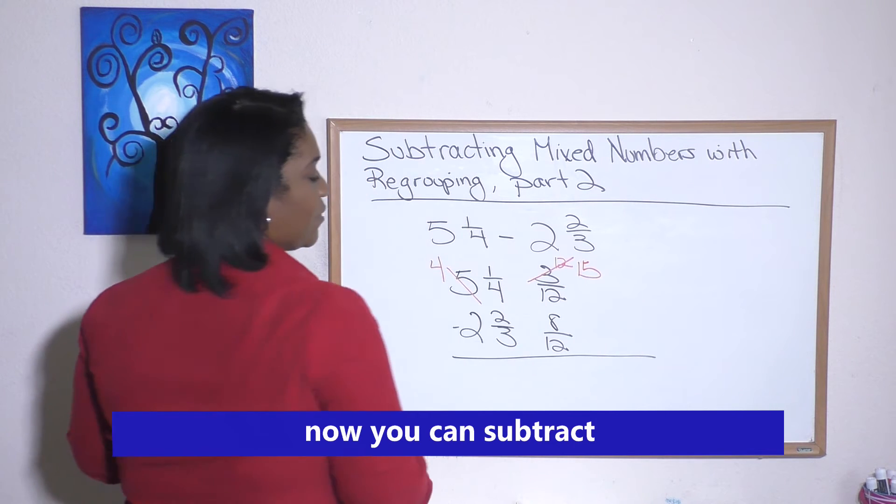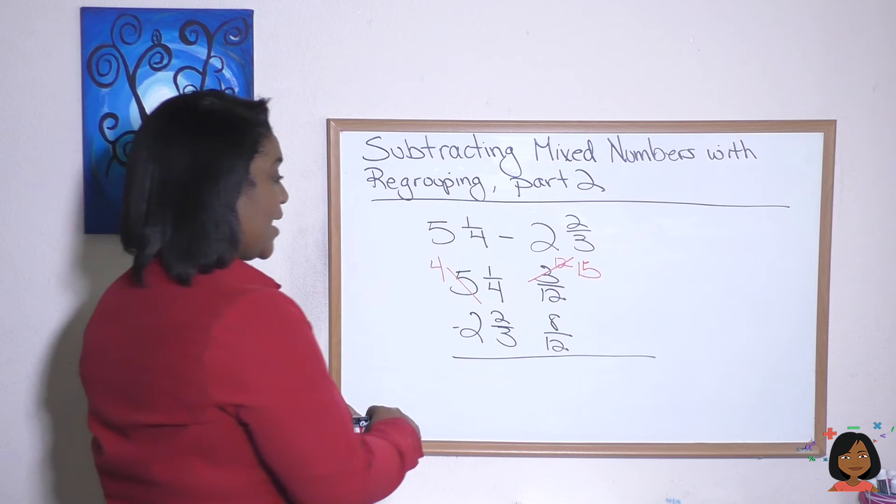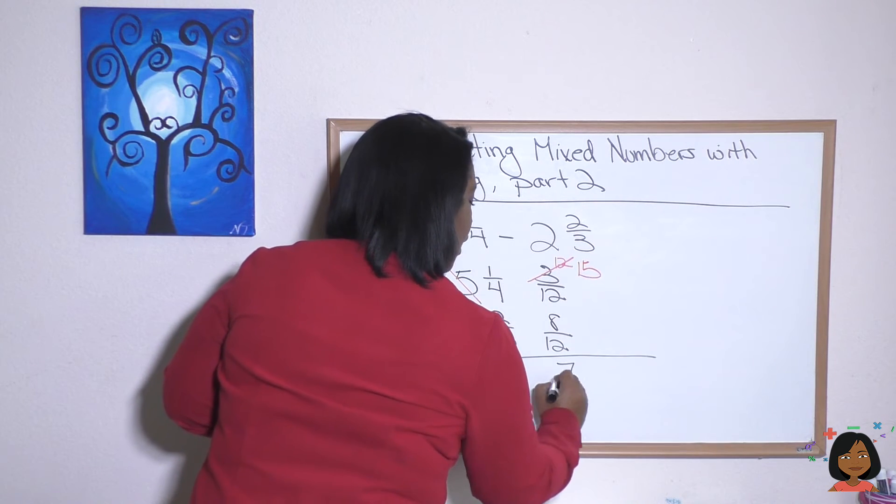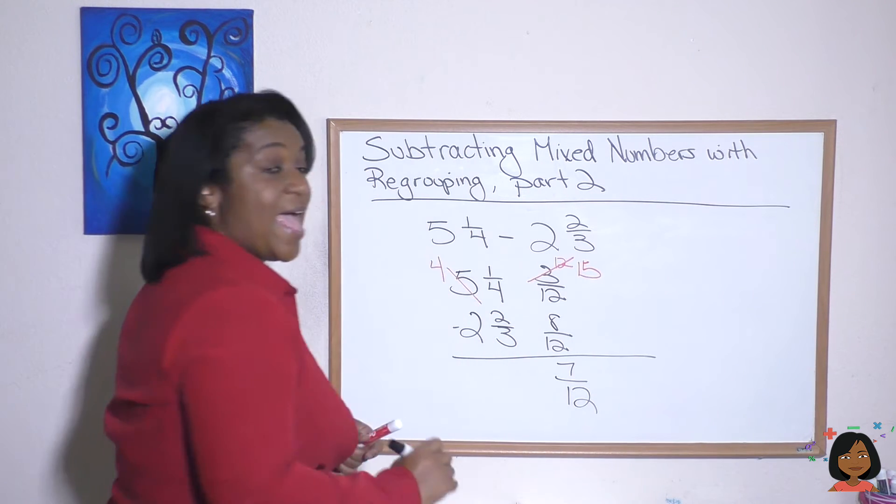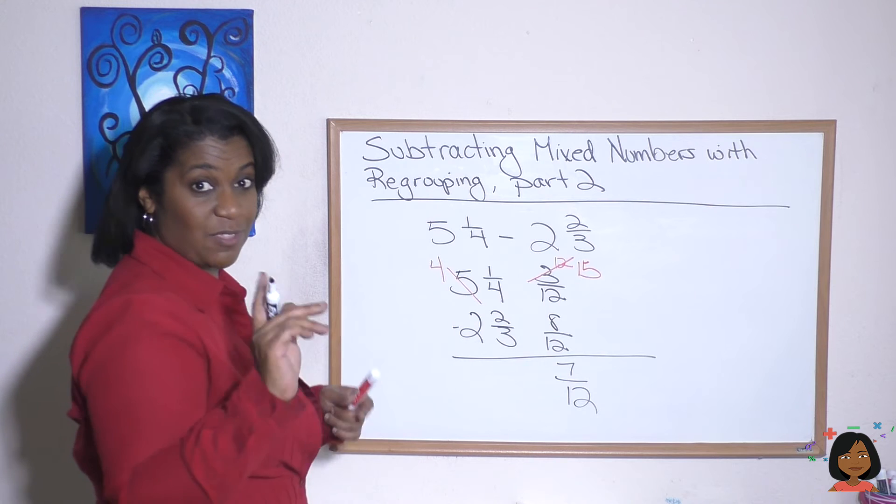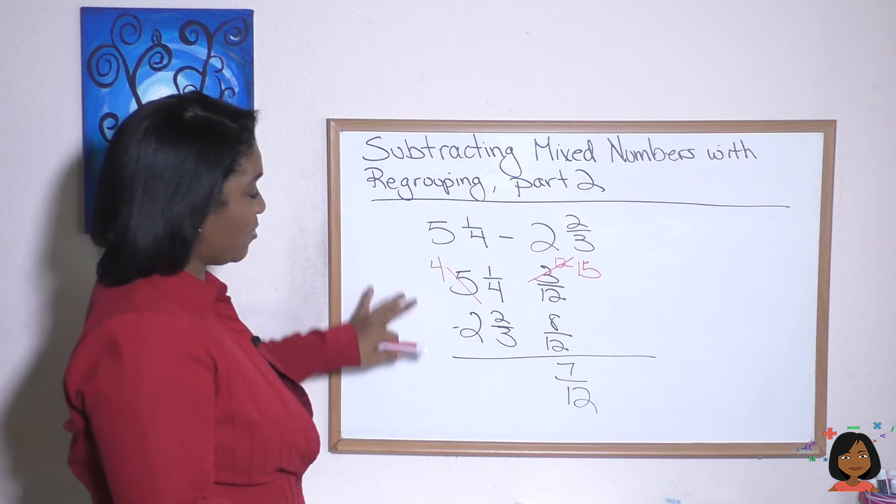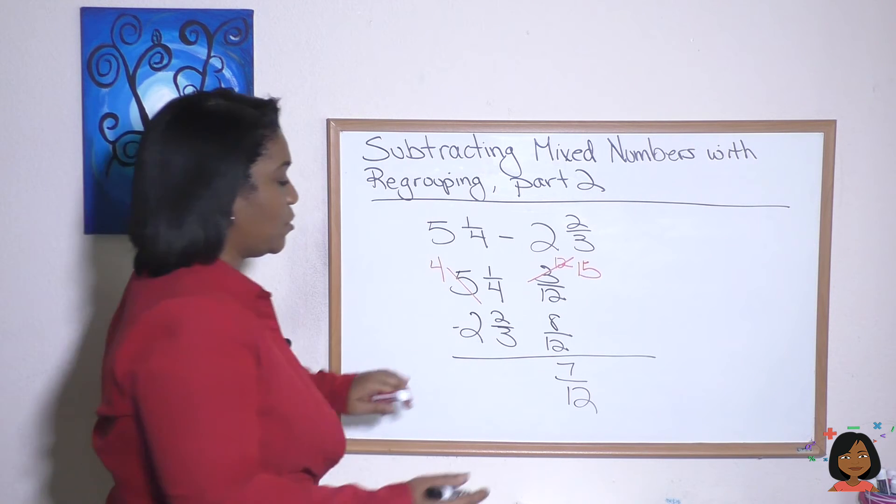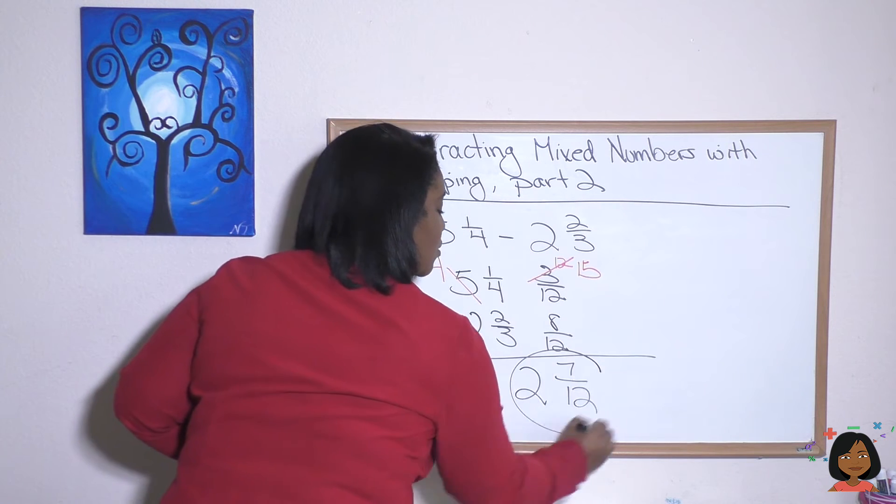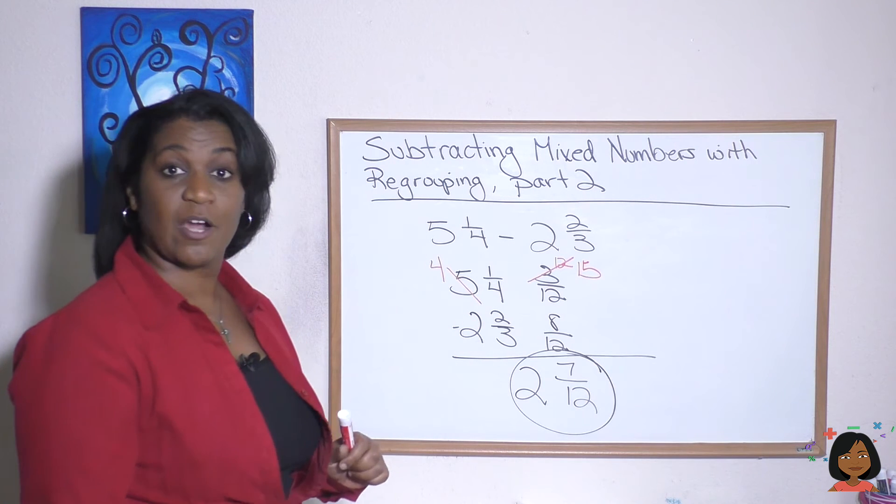Now we can do our subtraction. 15 twelfths minus eight twelfths. 15 minus eight is seven over 12. And don't forget about the whole number part of the mixed number. We've got four minus two is two. So two and seven twelfths is our answer.